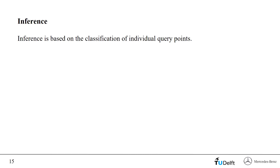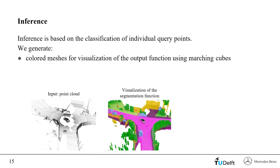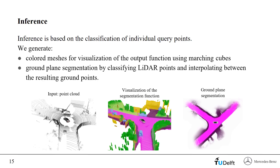All inference with SCSSnet is based on the classification of individual query points. To generate the semantic segmentation of the input point cloud, we just have to use all points of this point cloud as query points. To visualize the scene segmentation function, we create meshes that approximate the decision surface between free space and all occupied classes. The mesh generation algorithm uses marching cubes and applies a numerical optimization of vertices and face normals of the resulting mesh. To estimate a ground plane, we first classify the input point cloud, then select every LiDAR point predicted to be one of the ground semantic classes. Bilinear interpolation is applied to obtain a dense regular grid of ground points that we query for semantic classes a second time to obtain the final segmentation estimate.